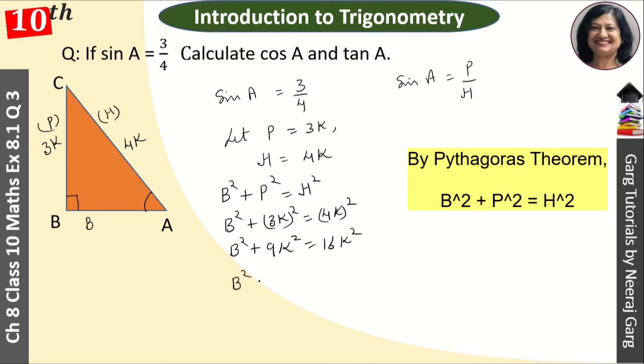Therefore B² equals 16K² minus 9K², which is 7K². So B equals root 7K. This is our base, root 7K.